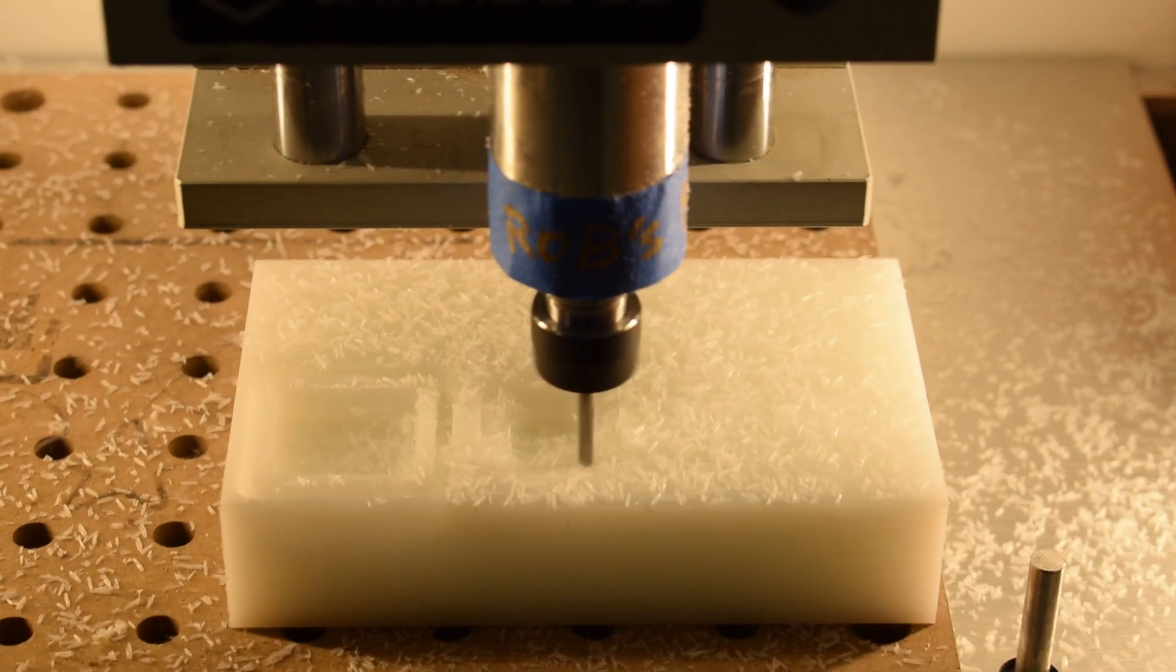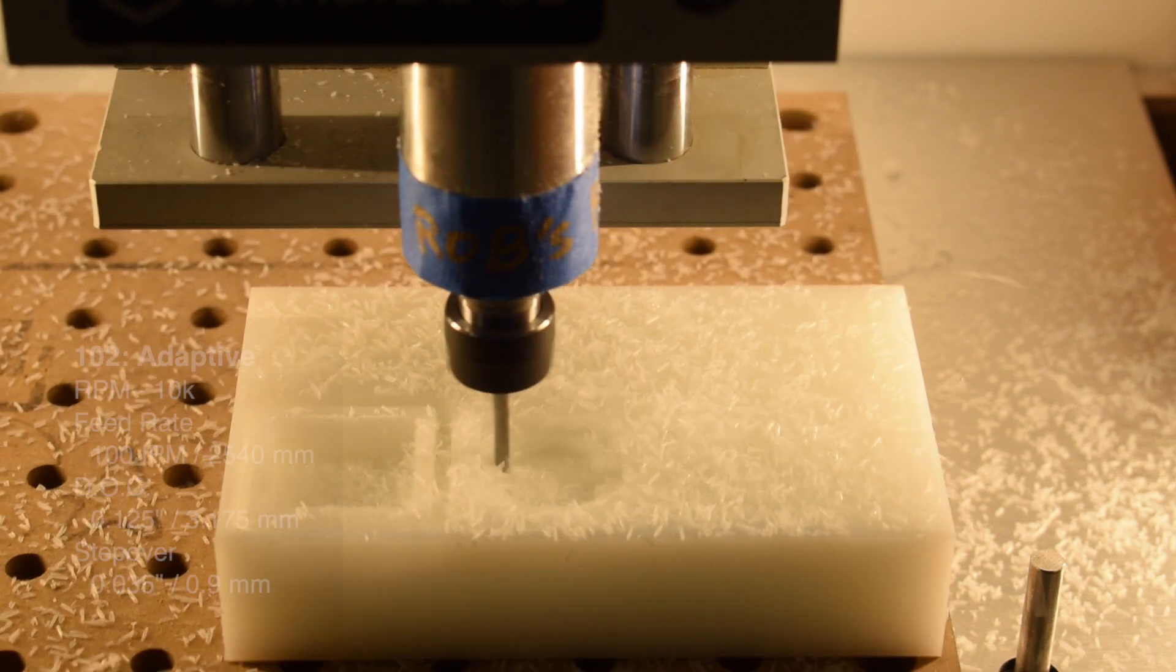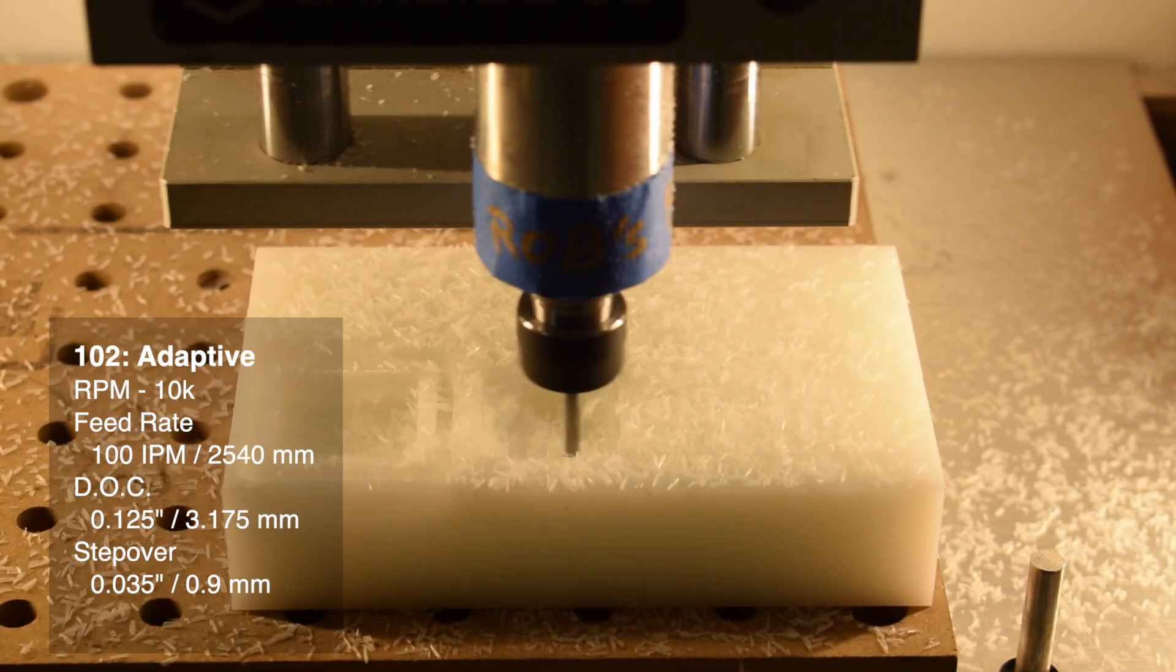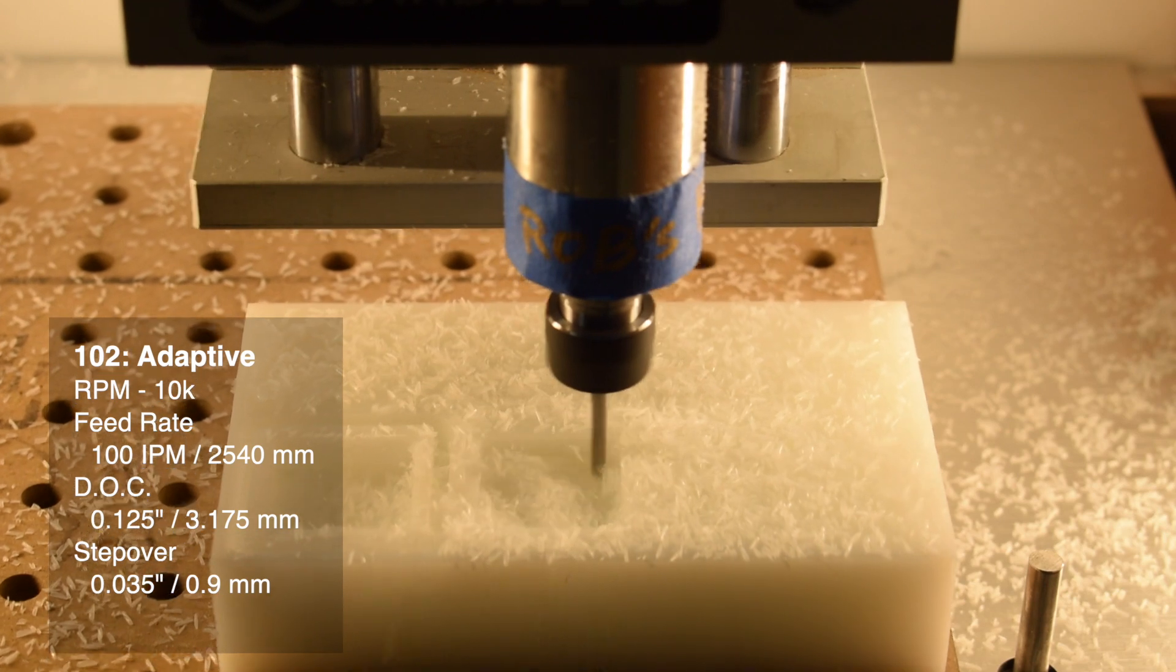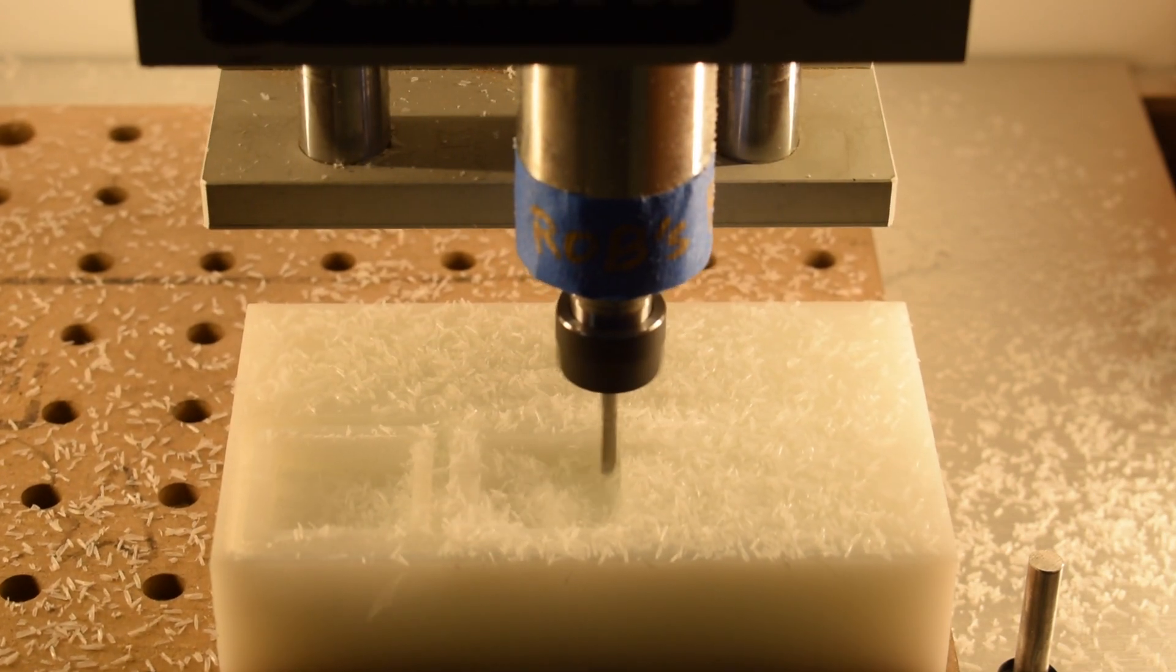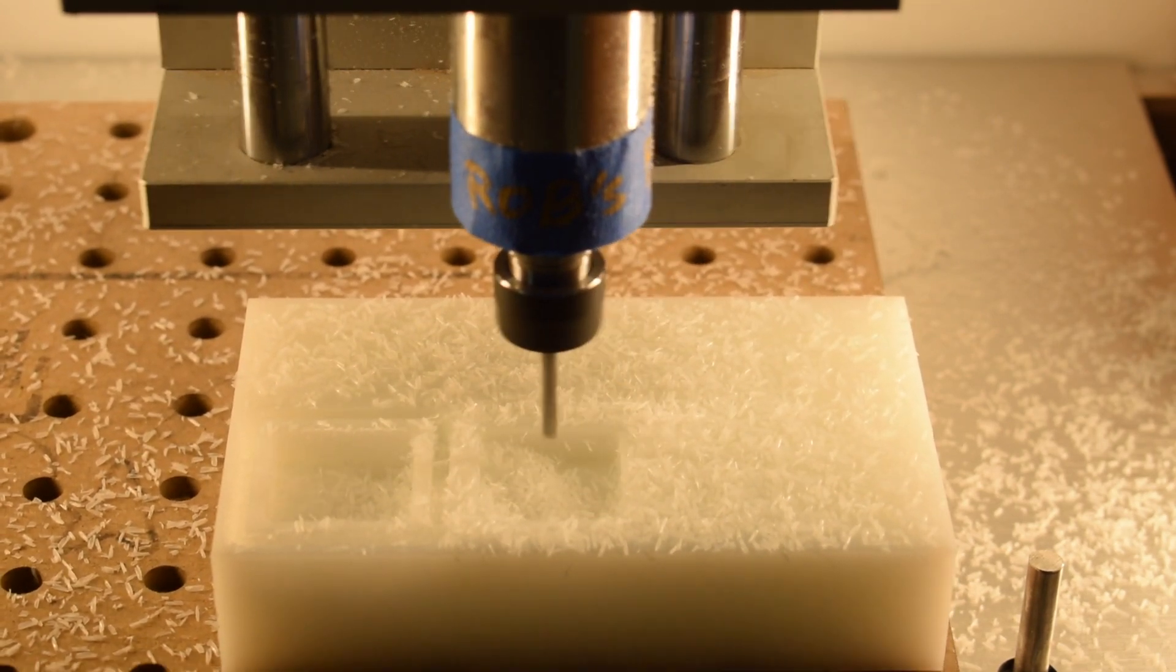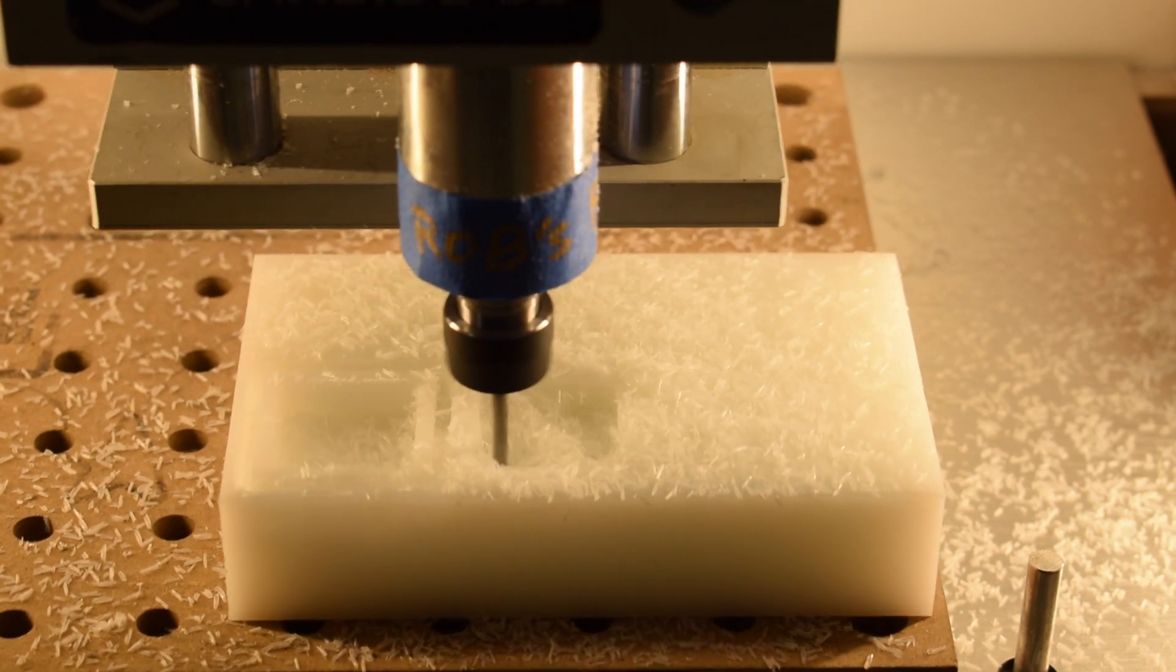And then for adaptive, you can just about max out the machine. 10,000 rpm, 100 inches per minute, eighth inch depth of cut, 0.035 inch optimal load. It's rare that we get a full end mill diameter deep in material, but HDPE is wonderfully forgiving in this case.